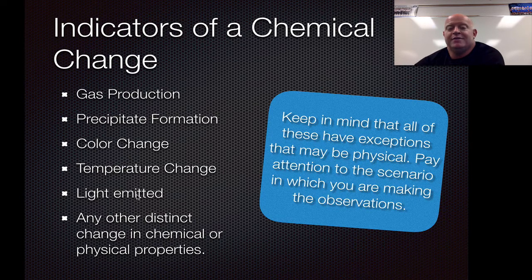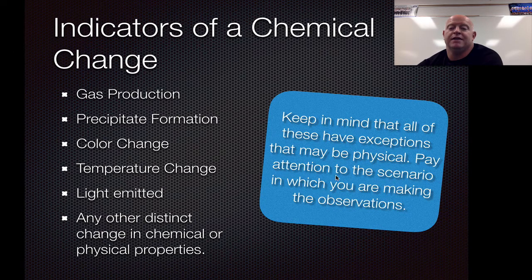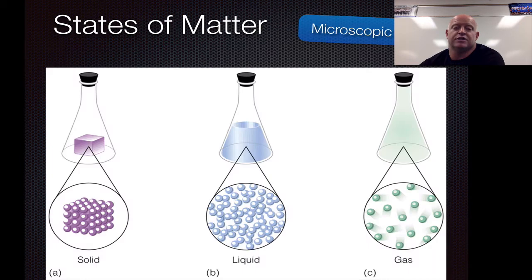Light being emitted — any time we see flames or light being given off, it's usually chemistry. And the last one: any other distinct change in chemical or physical properties — it's a catch-all. So if you see a distinct difference between the start and end of something that indicates a major change in properties, you probably did something chemical to it. Keep in mind everything has some exceptions, so use common sense. Take the scenario you're working under and ask: is this chemistry or not? So those are our indicators of a chemical change.